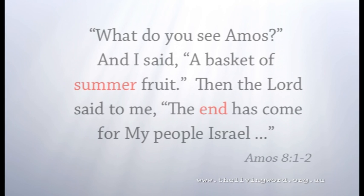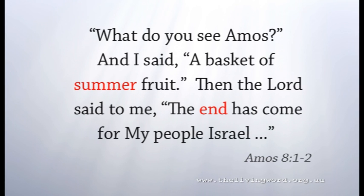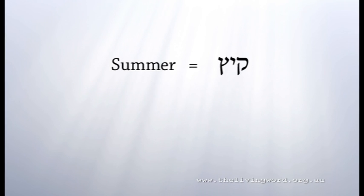We get the same idea in the book of Amos, chapter 8: 'Thus the Lord God showed me, and behold, a basket of summer fruit. He said, What do you see, Amos? And I said, A basket of summer fruit. Then the Lord said to me, The end has come for my people Israel.' It makes no sense to us in English, but the Hebrew word for summer fruit is kites — kuf, yud, tzadi — and the word for end in Hebrew is ketz — kuf, tzadi. To the Hebrew ear, these are very similar sounds. Once again, there is a play on words.